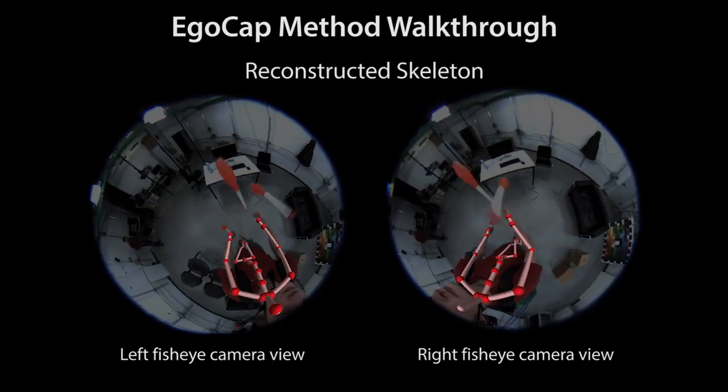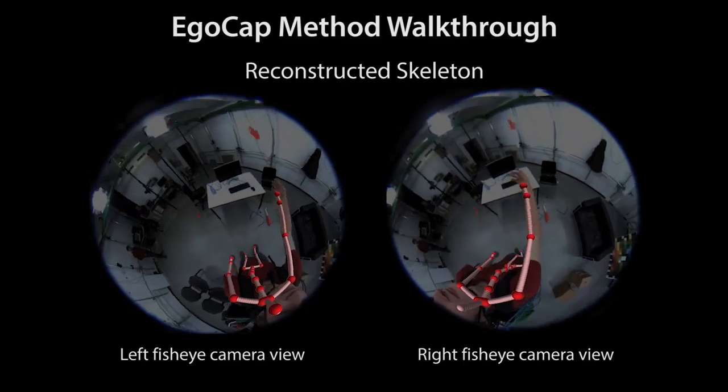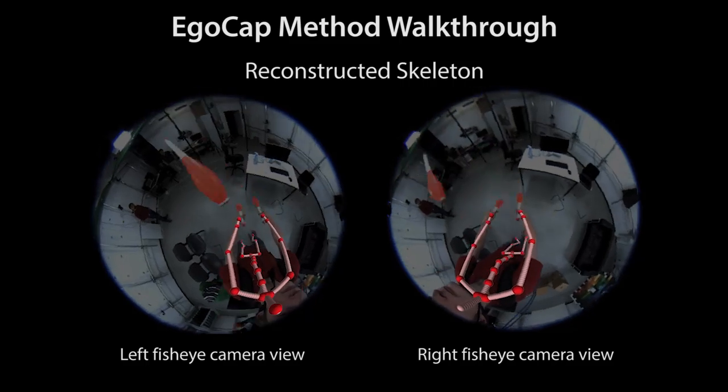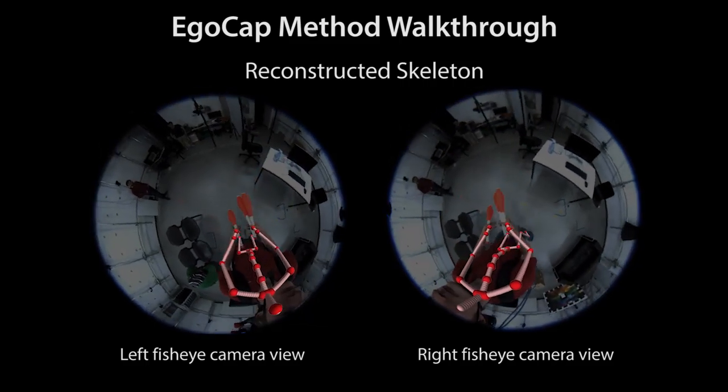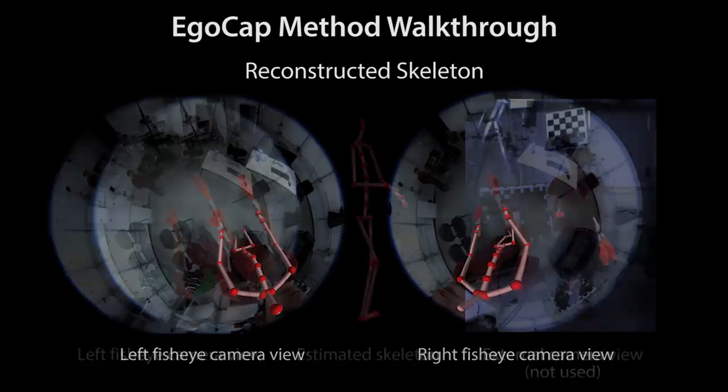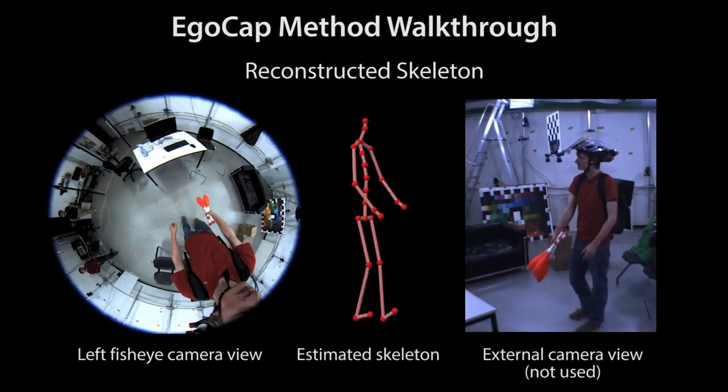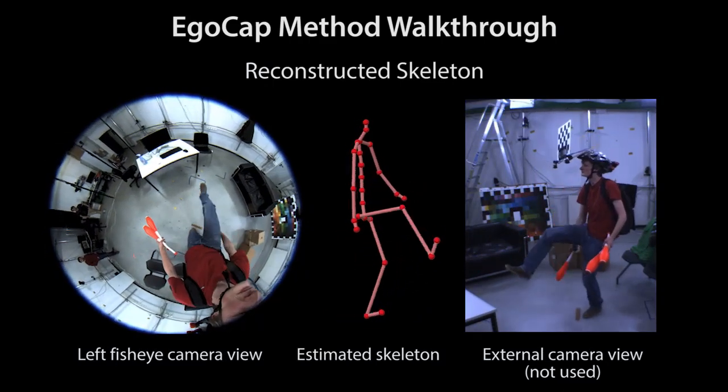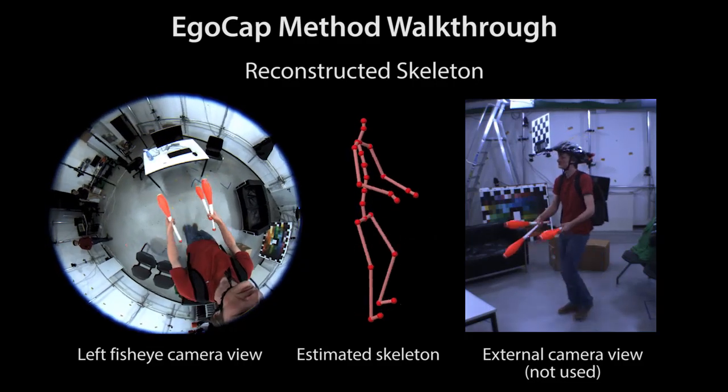This view shows the estimated skeleton overlaid on the input fisheye views. Whenever we overlay skeletons in fisheye views, we darken the input video for better visibility. Here we show an outside-in view for reference. Note that the checkerboard mounted on the camera rig is never used during reconstruction.